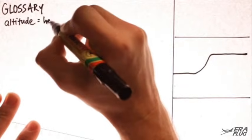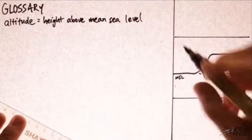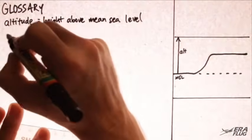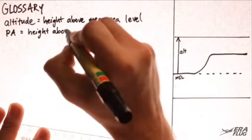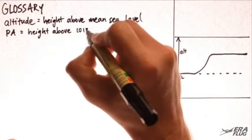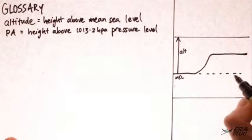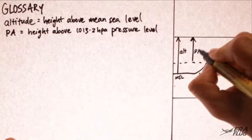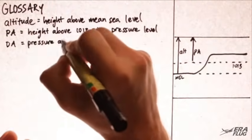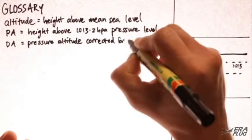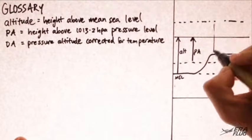Altitude is the height above mean sea level. Pressure altitude is the height above the 1013.2 hectopascal pressure level. Density altitude is the pressure altitude corrected for temperature.